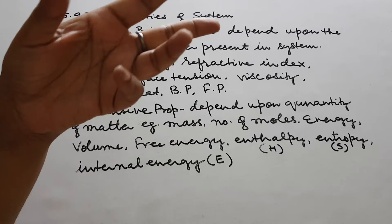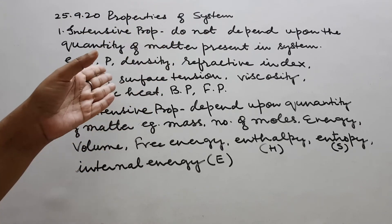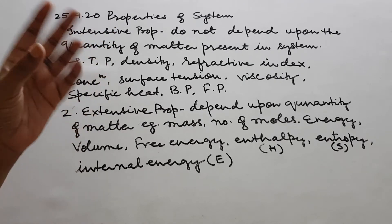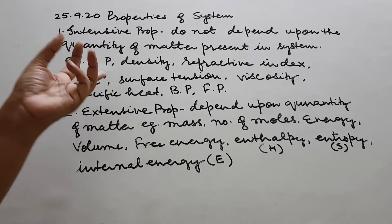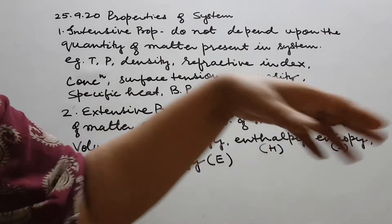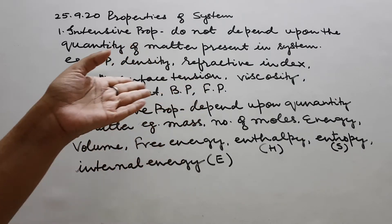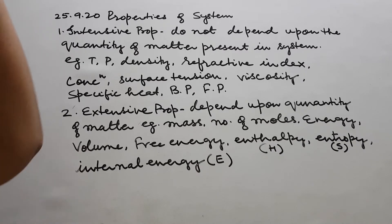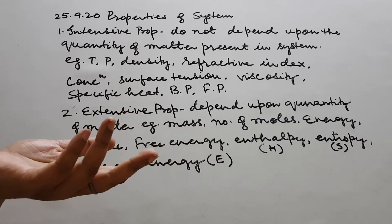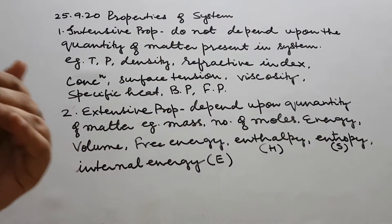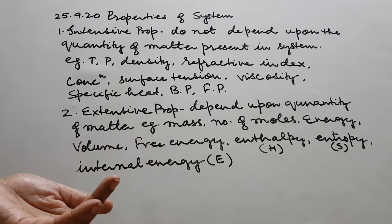You know this from class 9 — specific heat does not depend upon the quantity. Water in large or small amounts will have the same specific heat. But any other form of energy — heat or whatever — will be an extensive property, because it depends upon the mass. For example, if I walk 1 kilometer versus 2 kilometers, I require different amounts of energy for the different distances, because energy depends upon the matter.